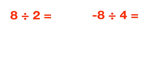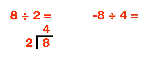This can also be done through long division. Since 8 is being divided by 2, we use long division to see how many times 2 goes into 8. 2 goes into 8 four times. Multiplying 2 times 4 gives 8. Subtracting 8 from 8 gives a remainder of 0. The correct answer is 4.